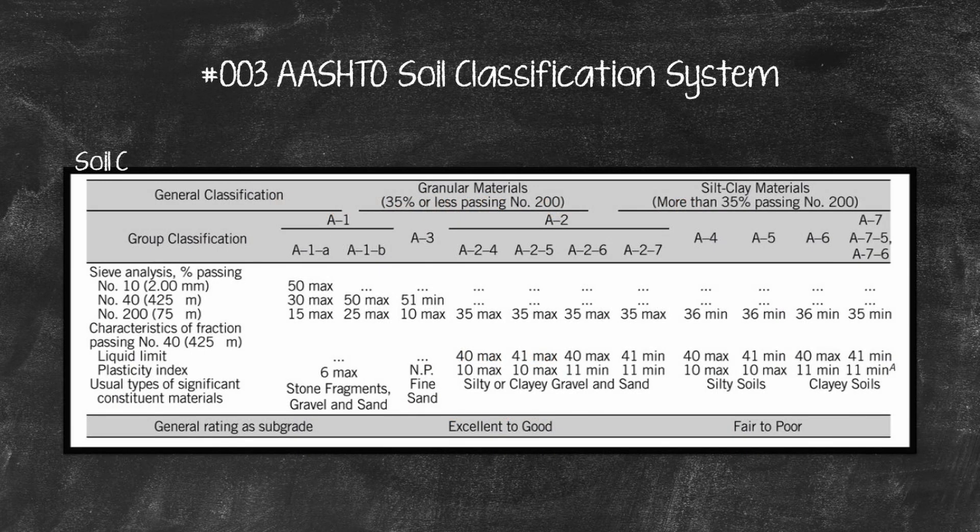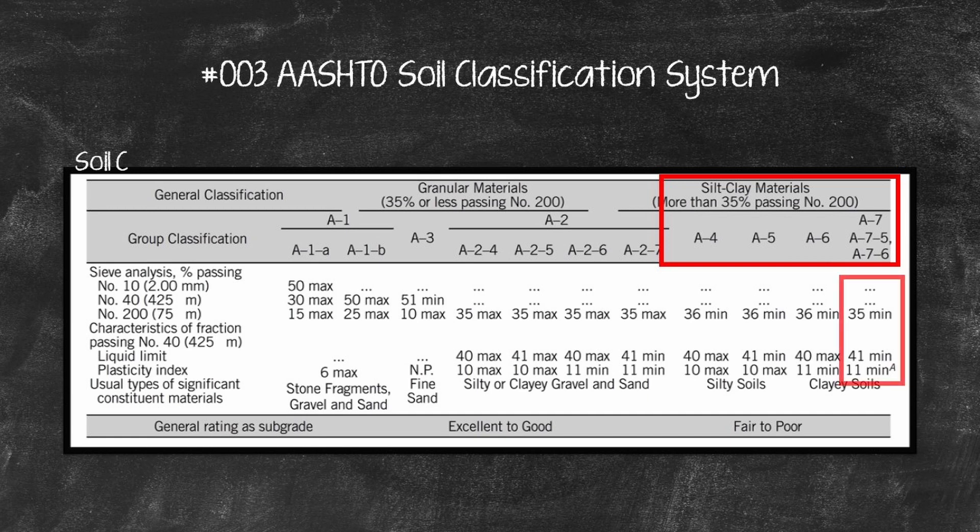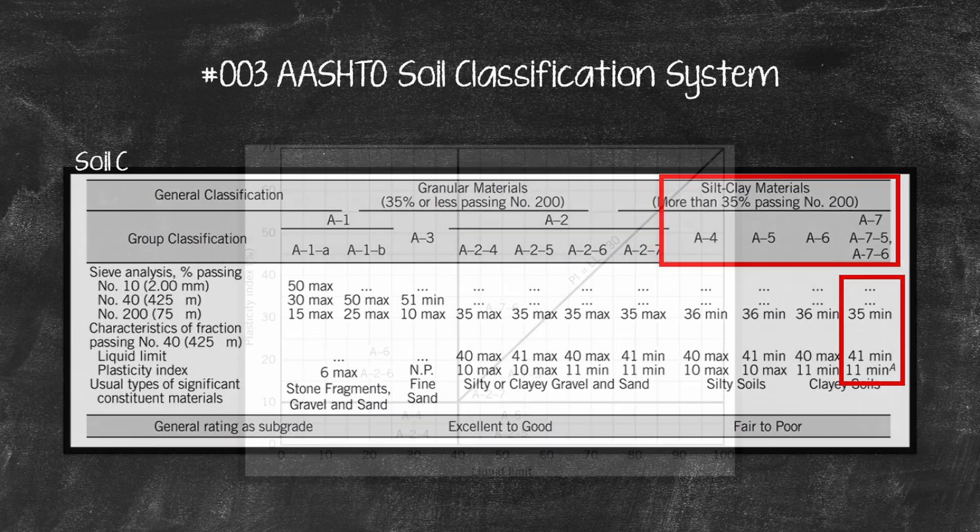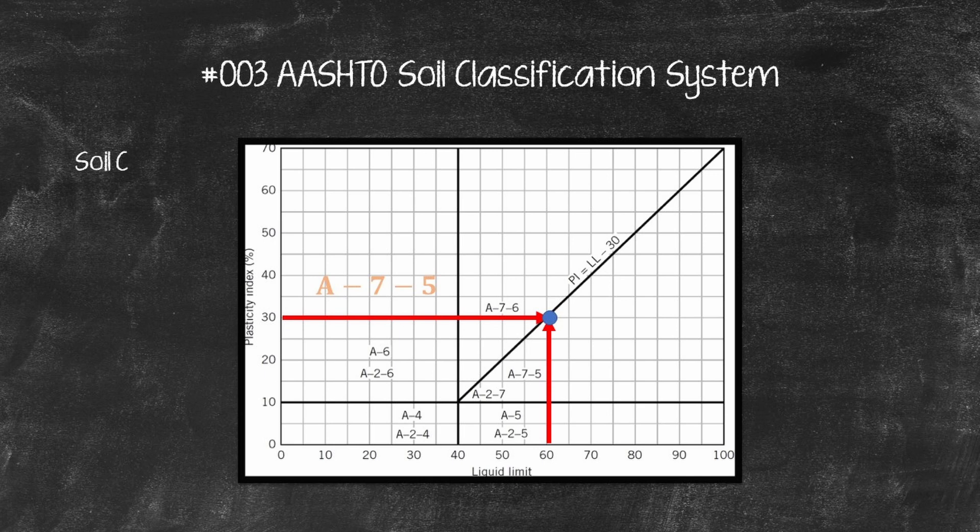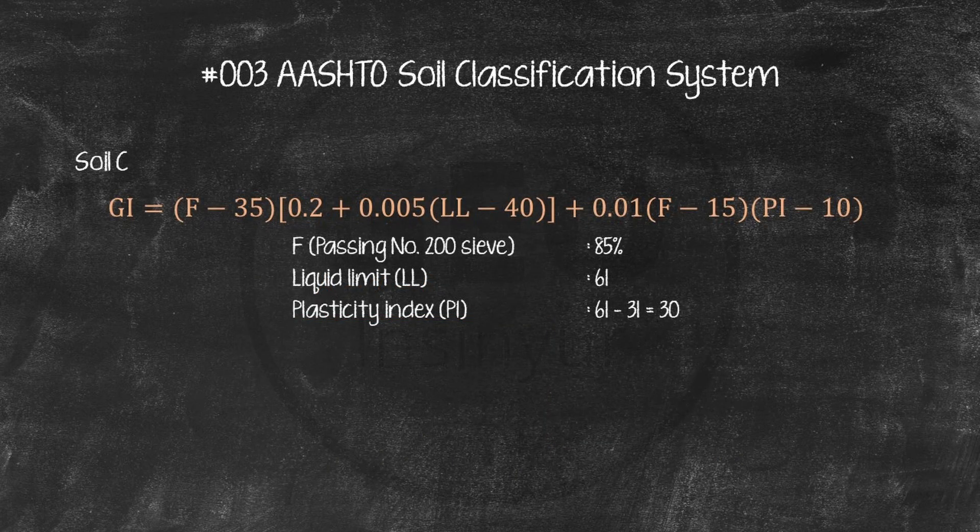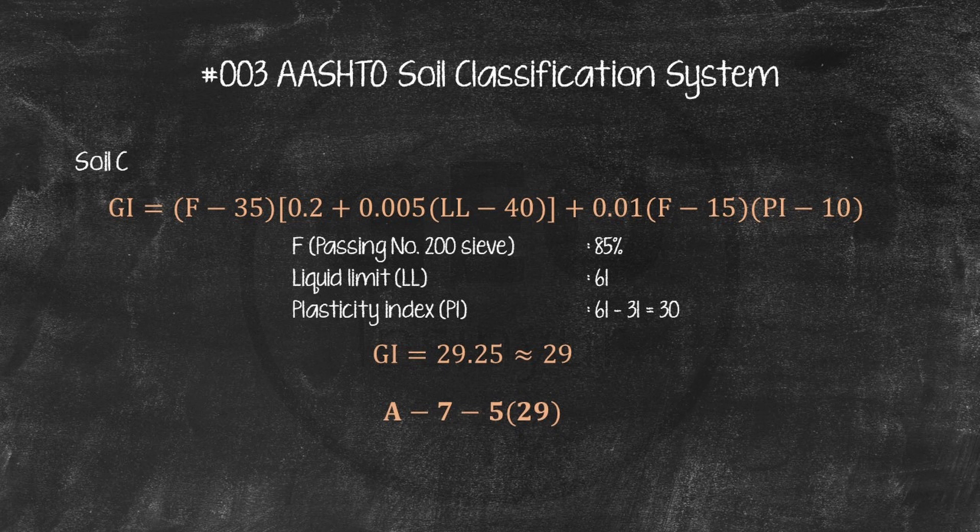Sample C. The percent passing the 200 sieve, 85%, is greater than 35%, cohesive soil. LL equals 61, PI equals 30. Begin with A4, and compare the requirements in the table, to get A75 or A76. To determine whether the soil is A75 or A76, use plasticity chart. In this case, PI equals 30 is less than LL minus 30 equals 31, and the soil is A75. GI equals 29.25, reported as 29. Classification is A75, 29.